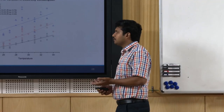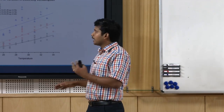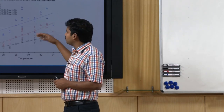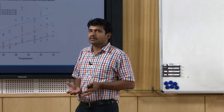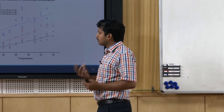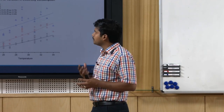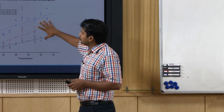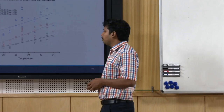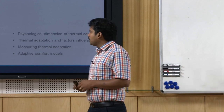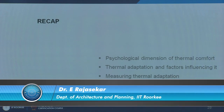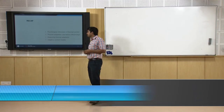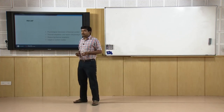Thermal adaptation has a significant impact on the actual monthly energy consumption of a building. We found considerable differences in monthly energy consumption among similar user groups living in similarly designed houses, due to personal variables and adaptive phenomena. In this module we looked at the psychological and psycho-physiological dimensions of thermal comfort, then talked about thermal adaptation and major factors influencing it, how to conduct an adaptive comfort survey and measure parameters in the field, and we also looked at a few adaptive comfort models. Thank you.